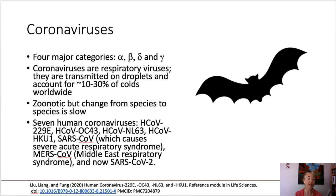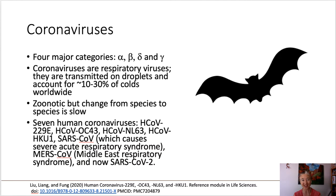You might have also heard of MERS — Middle East Respiratory Syndrome. In 2012, we began to see that disease. It's much more deadly than the current pandemic we're talking about right now, but it doesn't transmit very easily from human to human, so it's not very good at getting around. We sometimes like to say that it took coronaviruses three tries before they got really good at being contagious.